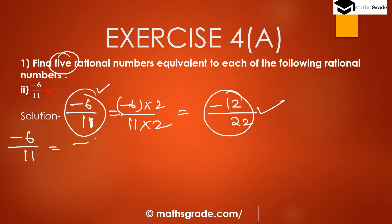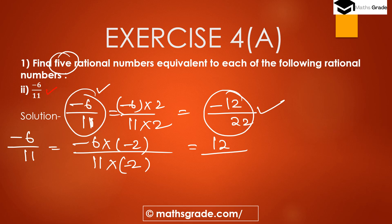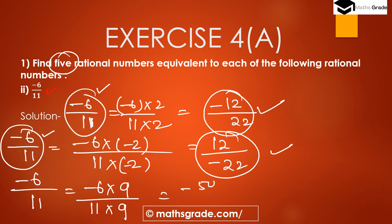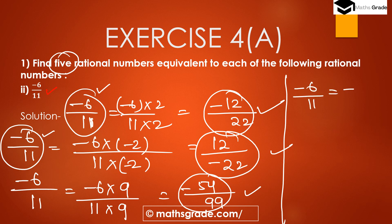For the second equivalent, multiplying -6/11 by -2: -6×(-2) = 12 and 11×(-2) = -22, giving 12/(-22). For the third, multiplying by 9: -6×9 = -54 and 11×9 = 99, giving -54/99. For the fourth, multiplying by 1: -6/11 itself is an equivalent rational number.